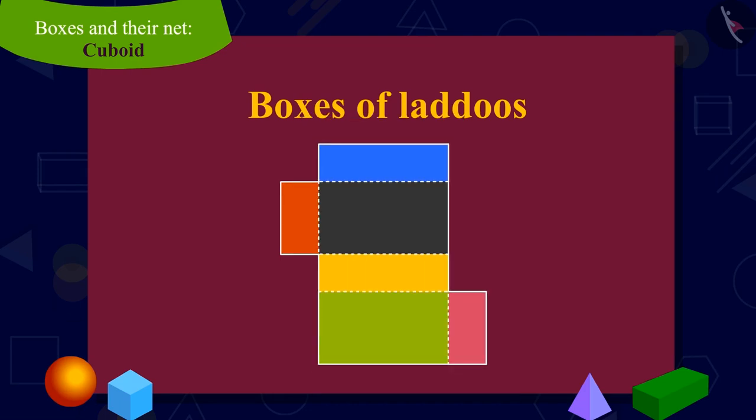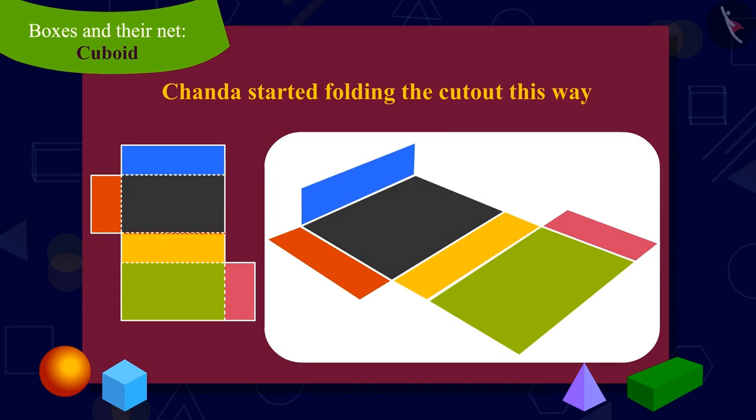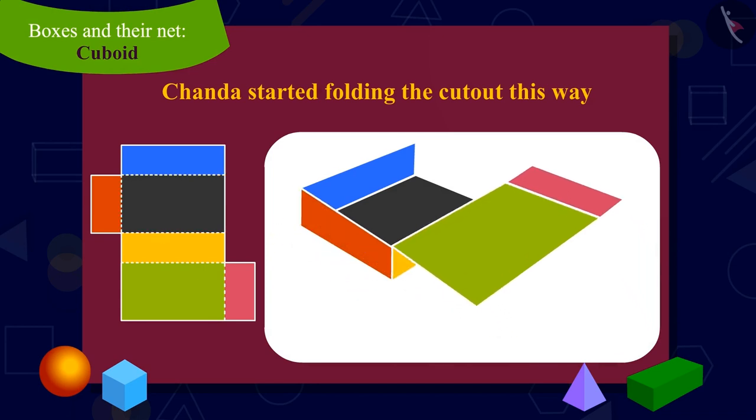Appu showed Chanda a cardboard cutout. He asked Chanda to fold the cutout on the line with dots on it. Chanda began to fold the cutout in this manner.